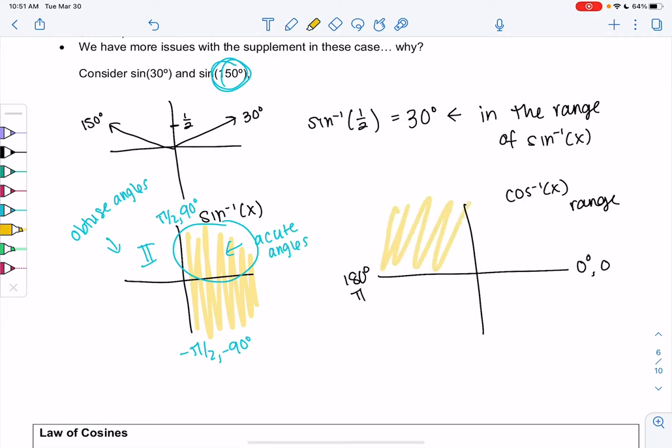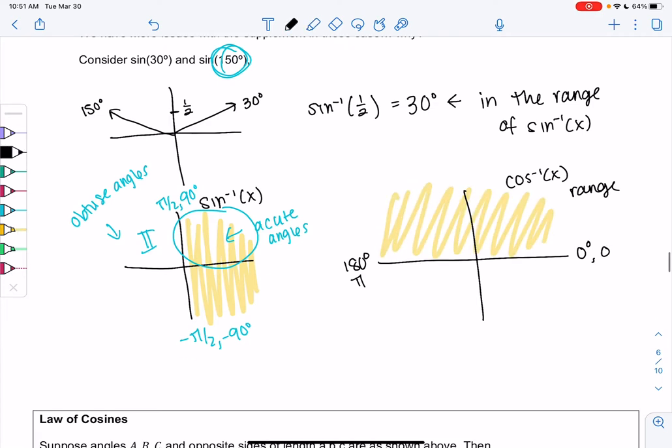And so law of cosines solves this problem because cosine inverse, remember the range was from zero degrees to 180 degrees or zero to pi.